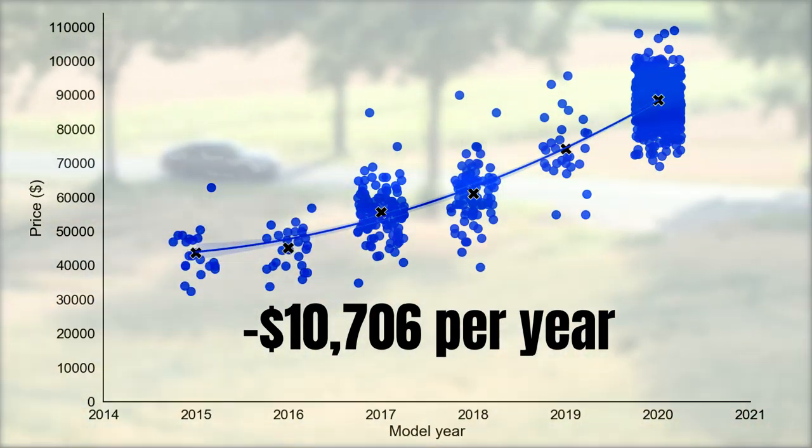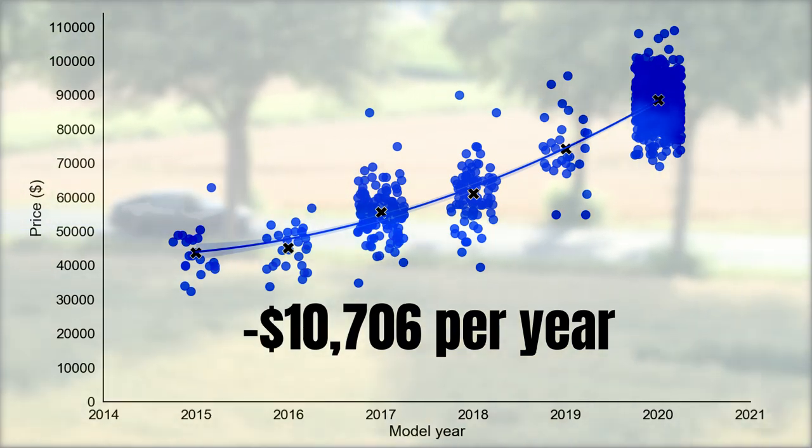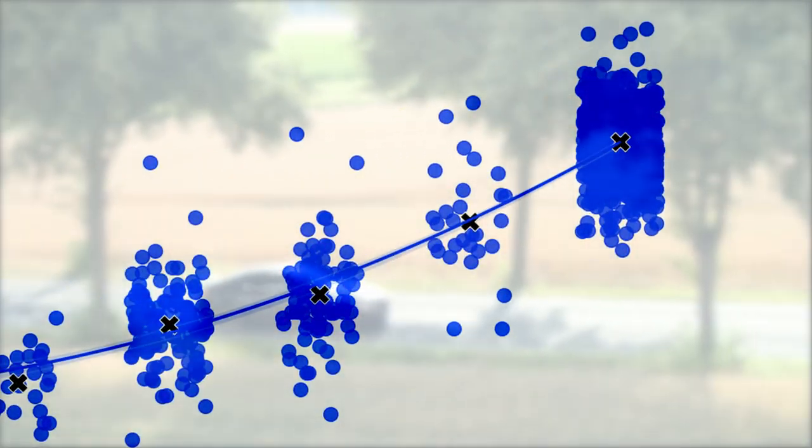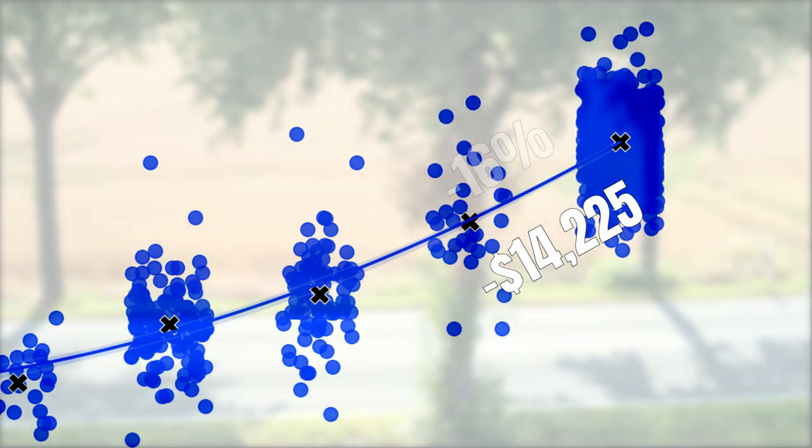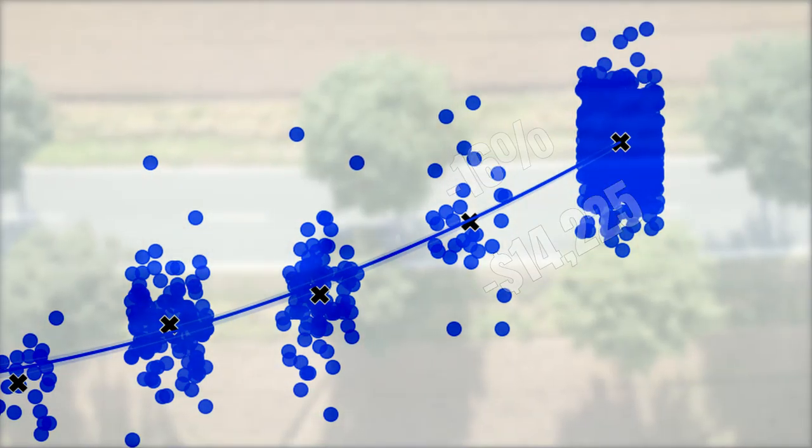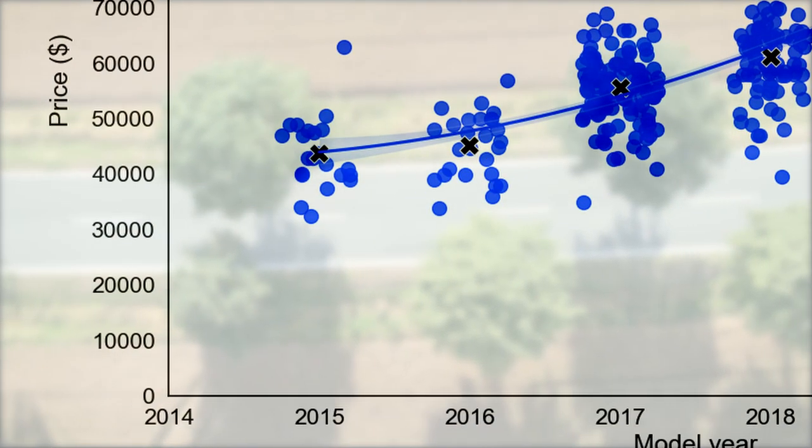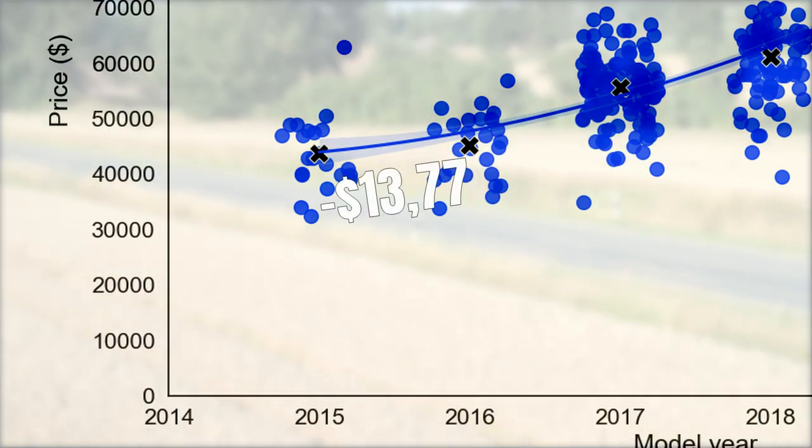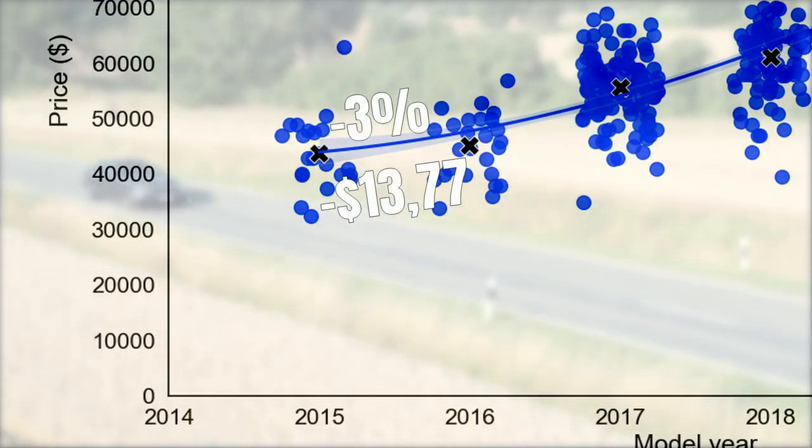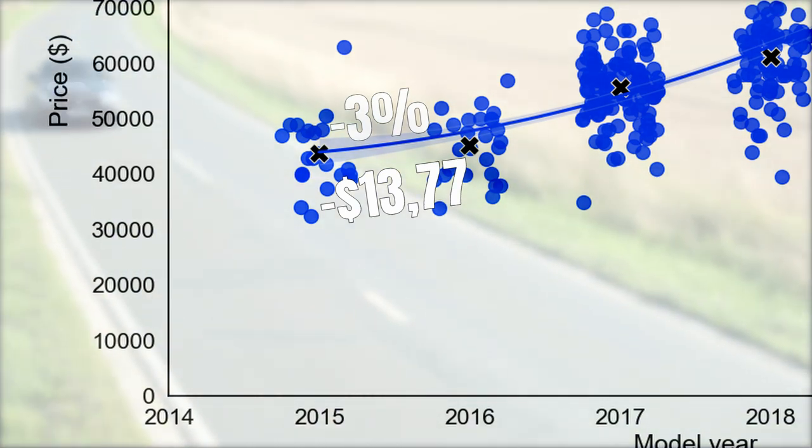And as you would expect there's a huge difference depending on the age of the car. In the first year you will lose on average $14,225 or 16% of the car's value. After 5 years however this number decreased to $1,377 or 3% of the average price for a 2016 car.